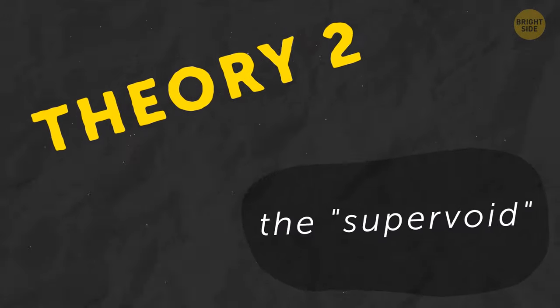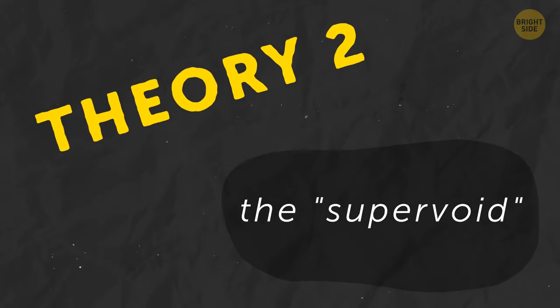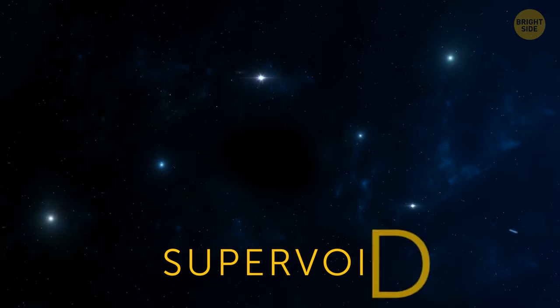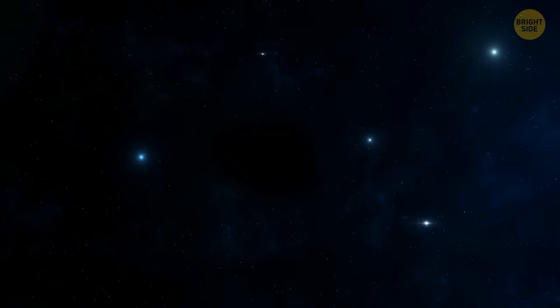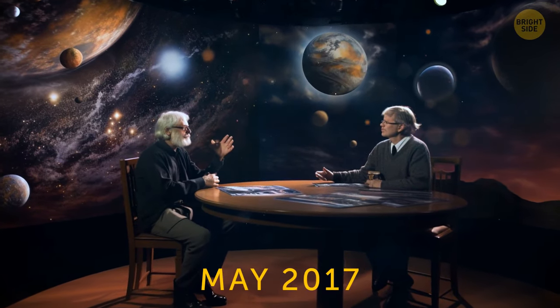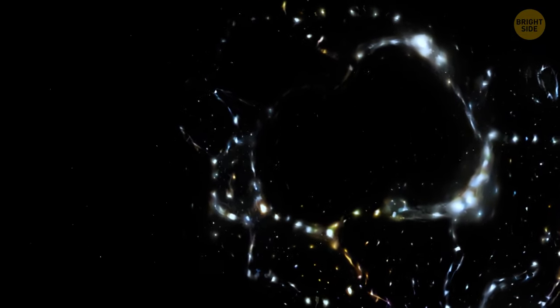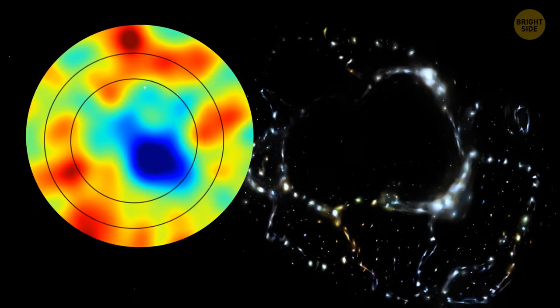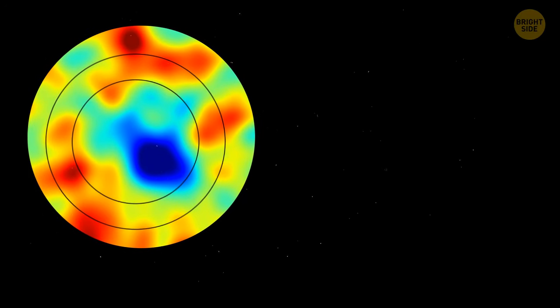Theory 2. The supervoid. This hypothesis was considered the most plausible for a while. It stated that the cold spot was actually the so-called supervoid. It's a terrifying, dark place of our universe with almost no galaxies. And because it's an empty region with almost no stuff in there, it seems cold to us. However, this theory was refuted in May 2017. After carefully examining the cold spot, scientists found out that there were no signs of a supervoid there. Moreover, voids and supervoids, which actually exist, by the way, are still very small in size. The cold spot is literally thousands of times bigger than them, so there must be some other explanation. And there is one. Perhaps the most bizarre of them all.